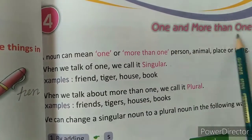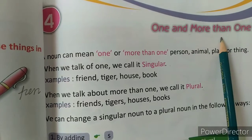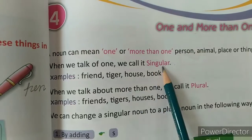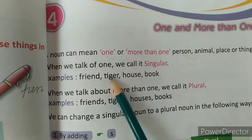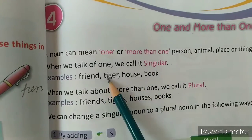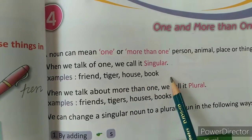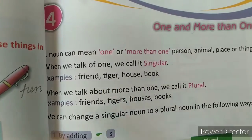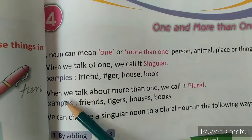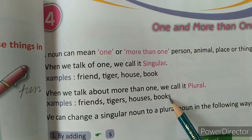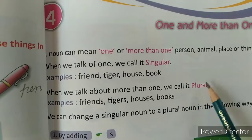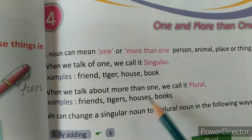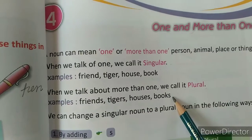So what is the meaning of this title? When we talk of one, we call it singular — like friend, tiger, house, or book. These are examples of singular. And when we talk about more than one, we call it plural — for example, friends, tigers, houses, books.